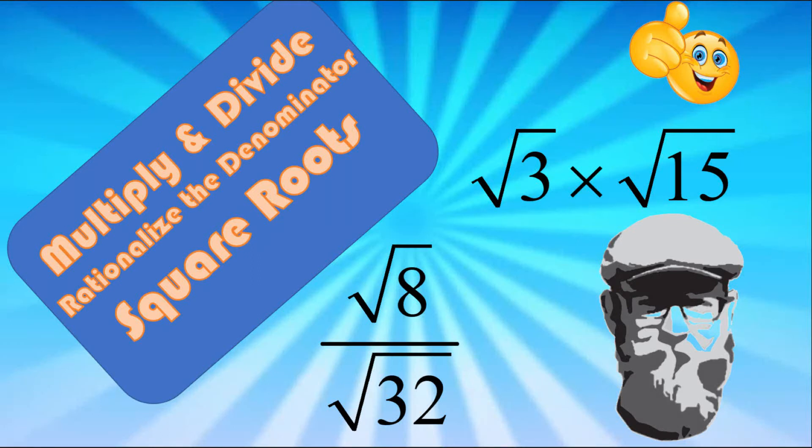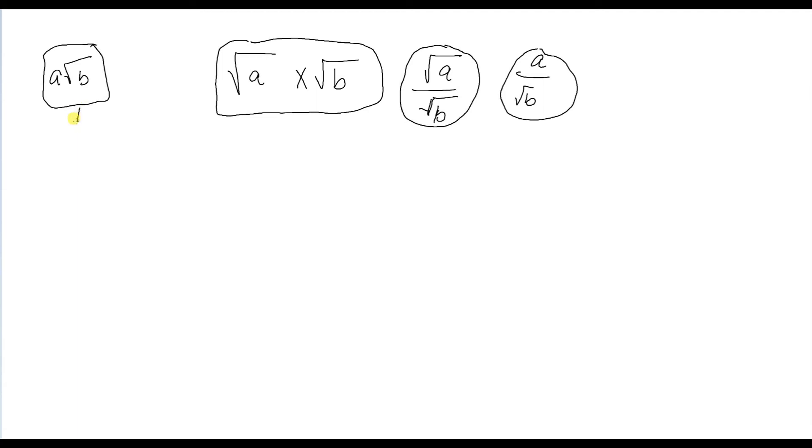Alright ladies and gentlemen, here's what we're going to do in this video. We're going to talk about four things. We're going to talk about how to multiply rational numbers and square roots, we're going to talk about how to multiply square roots together, we're going to talk about division of square roots, and then we're going to talk about this ugly thing called rationalizing the denominator. It's really not that difficult. We'll make it as easy as we can. So anyway, let's get started.